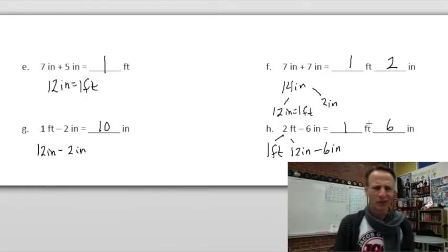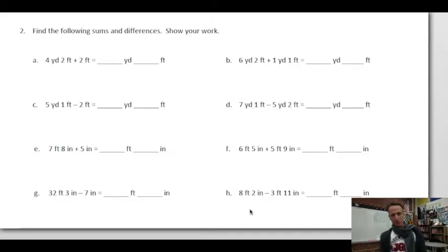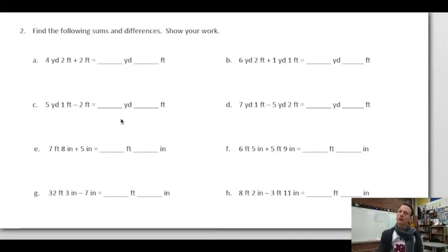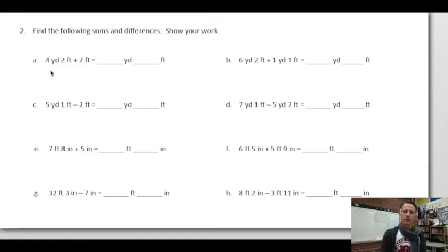On to number two — these eight problems we've seen before. This is where we slow down and take time. We need to find sums and differences showing our work, but there will be conversions along the way. Let's be patient, do this right, and actually understand what we're doing.